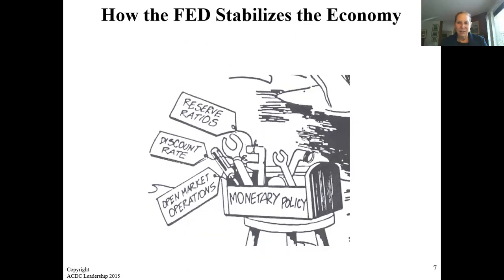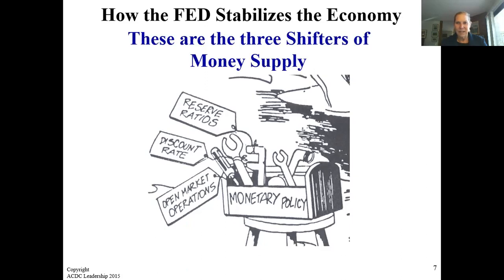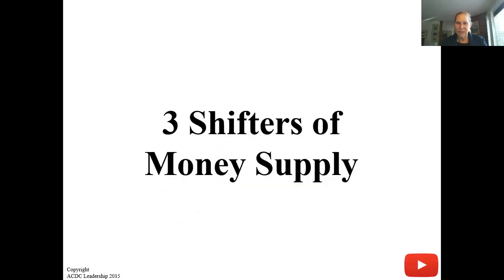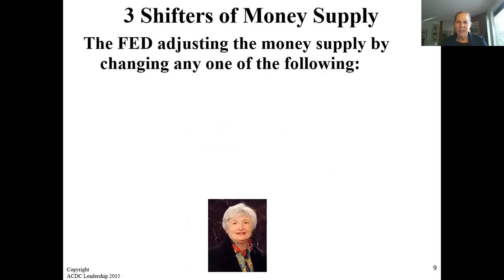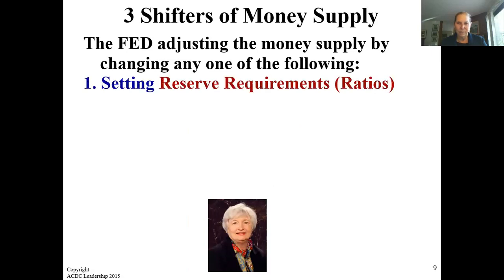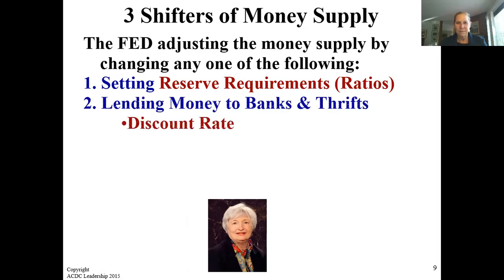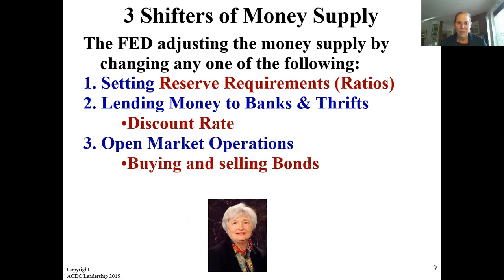How the Fed stabilizes the economy with monetary policy — they use reserve ratios, the discount rate, and open market operations. These are the three shifters of money supply. The Fed adjusts the money supply by changing any one of the following: setting the reserve requirements, lending money to banks and thrifts at the discount rate, and open market operations — buying and selling bonds.